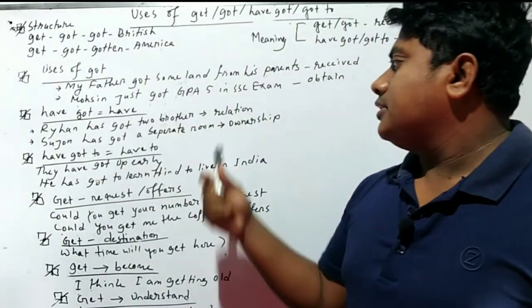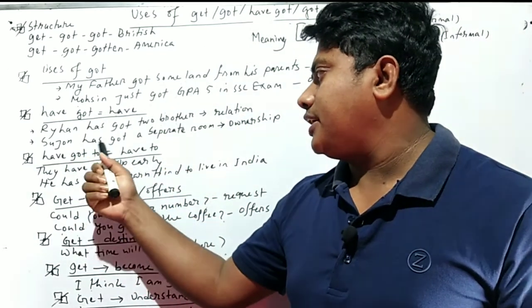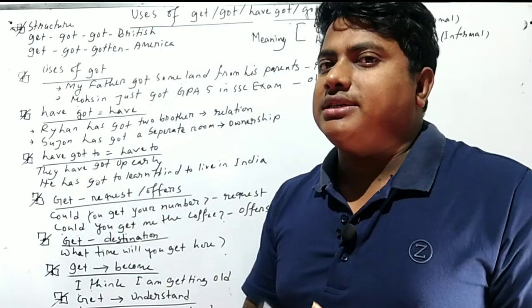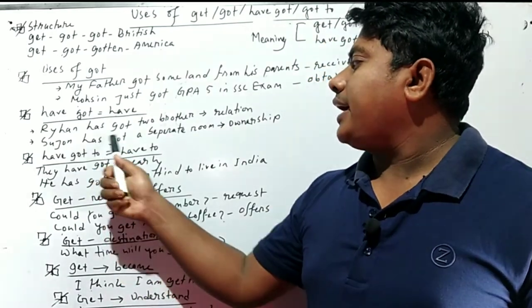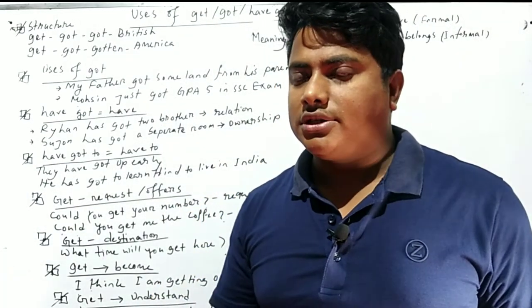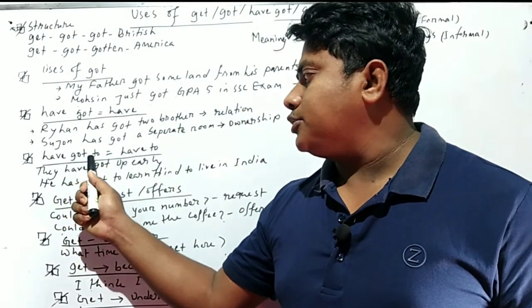The student has got a separate room. Here, the room belongs to the student. It expresses ownership. Another thing is have got to. Though have got to - in practical life we use have to as a formal word.